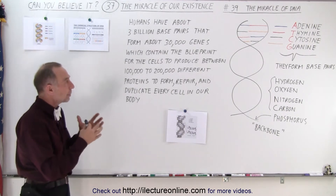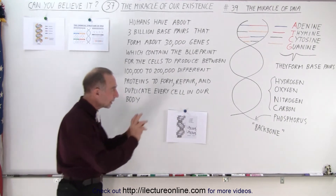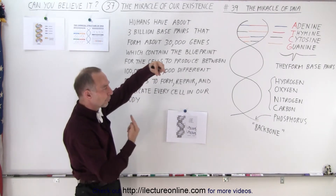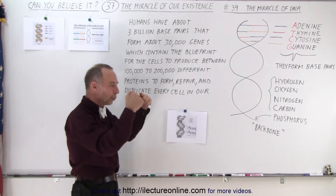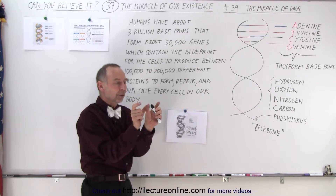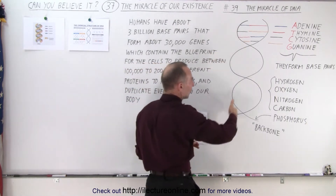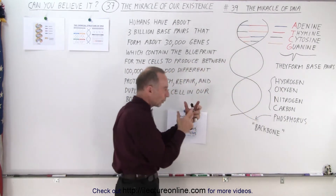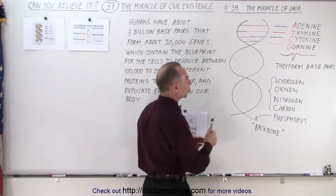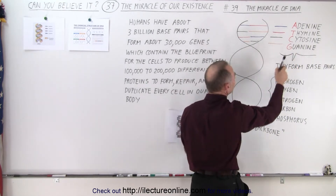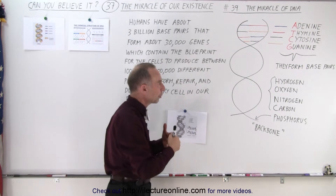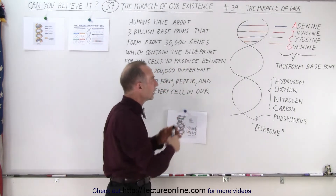It's an extremely complex molecule that is kind of twisted up, like a ladder that's twisted over and over again. The rungs in the ladder are made up of two molecules that connect the left part to the right part of what they call the helical structure. Those four molecules are called adenine, thymine, cytosine, and guanine, and they link up in pairs — those are called the base pairs of the DNA molecule.